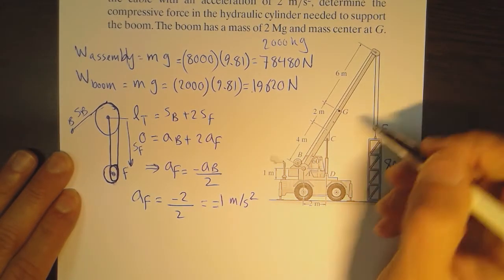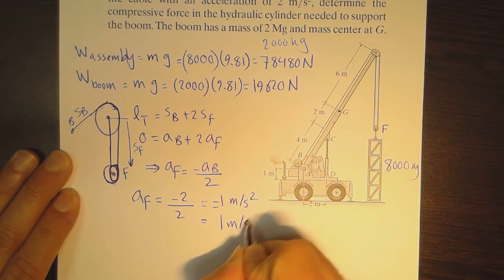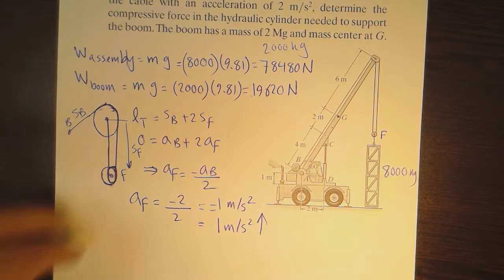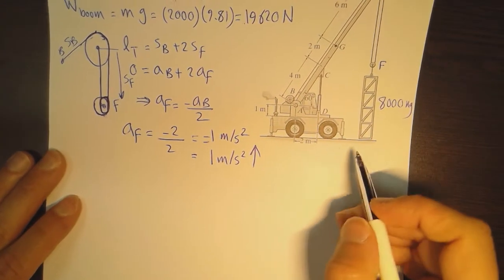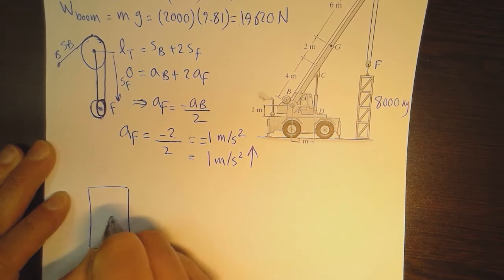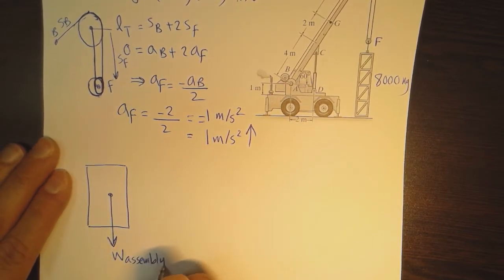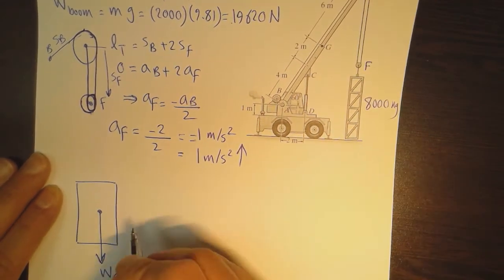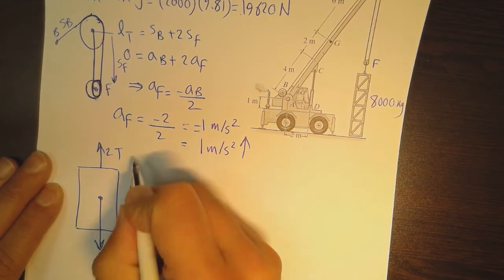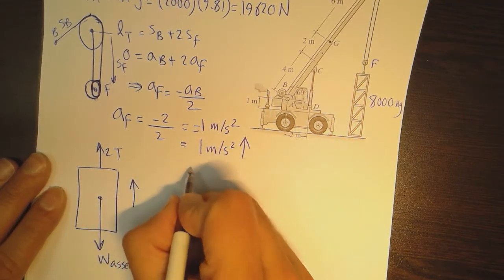The negative sign simply indicates direction — the assembly is going up at an acceleration of one meter per second squared. Now we draw the free body diagram of the assembly itself. The weight of the assembly acts downward, and we have two cable tensions T acting upward. The upward direction is taken as positive.